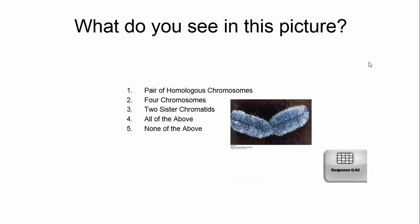Quick question: what do you see in this picture, drawing upon previous knowledge? Do you see a pair of homologous chromosomes? Do you see four chromosomes? Do you see two sister chromatids? Do you see all of the above, or none of the above? Think about that for a second.